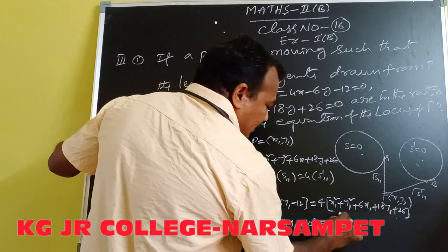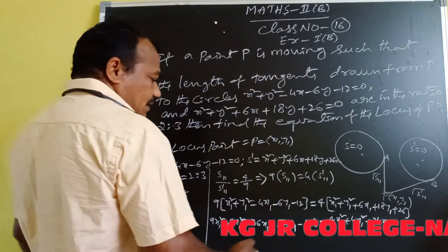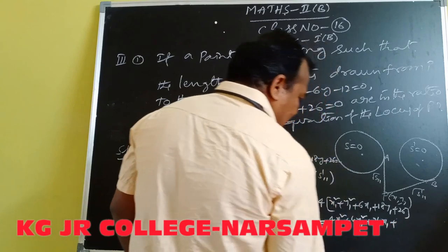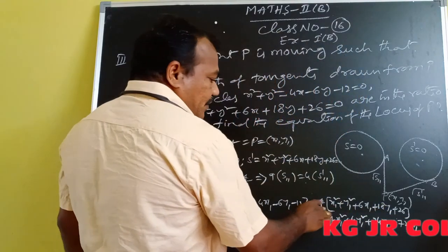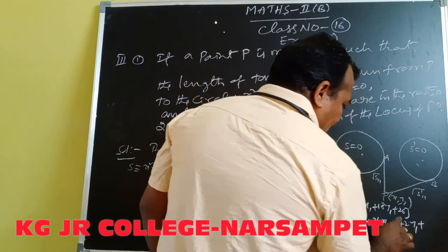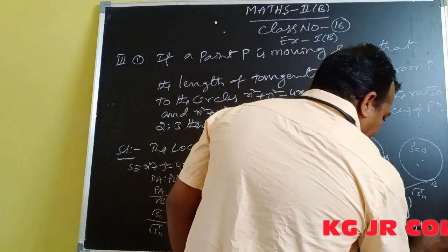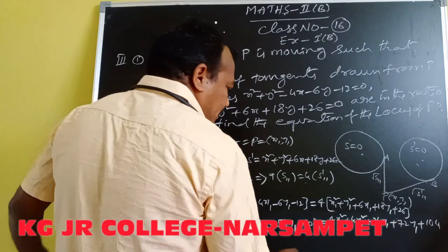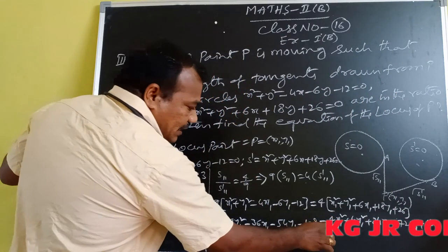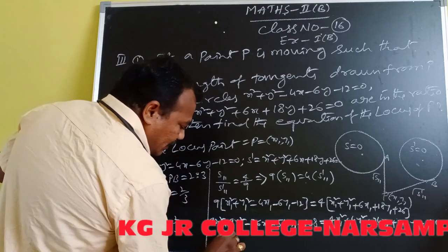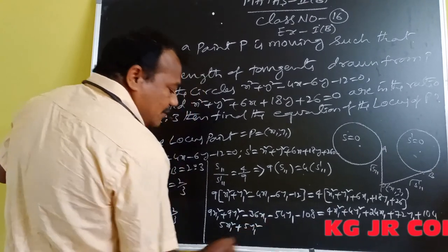Expanding the left-hand side: 9x1² + 9y1² - 36x1 - 54y1 - 108. Right-hand side: 4x1² + 4y1² + 24x1 + 72y1 + 104. Bringing all terms to the LHS: 9x1² - 4x1² = 5x1², and 9y1² - 4y1² = 5y1².